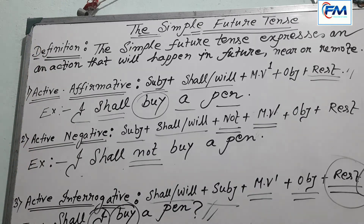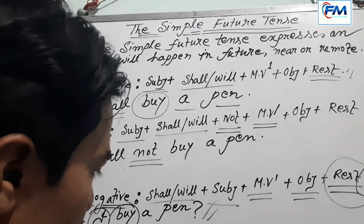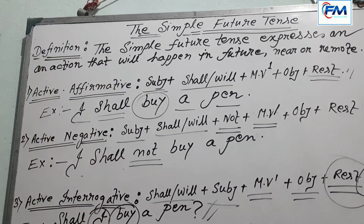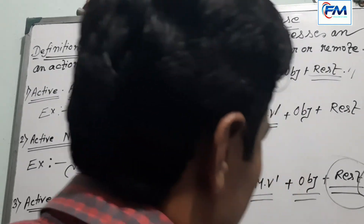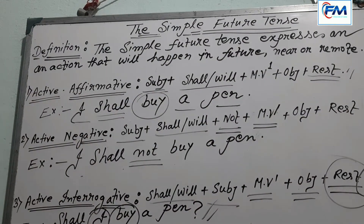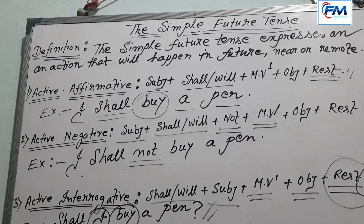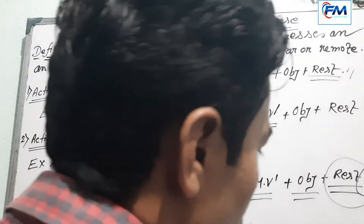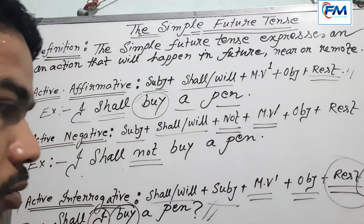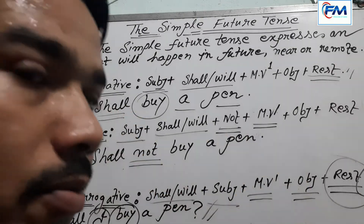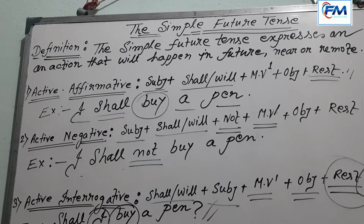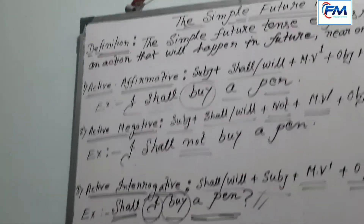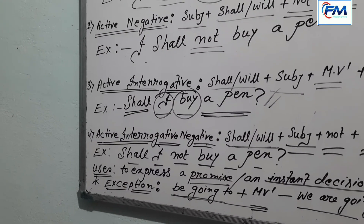What is the exception? When the sentence is in present form, you can use 'be going to + main verb (present form).' The example is: 'We are going to buy a car.' This sentence belongs to the simple future tense, and this is the exceptional rule.